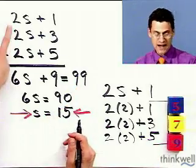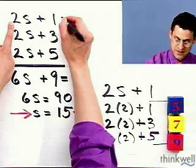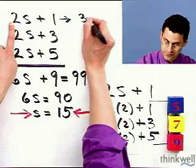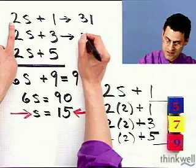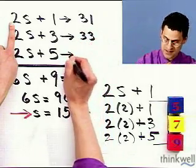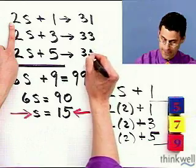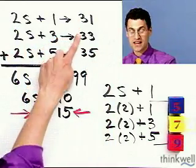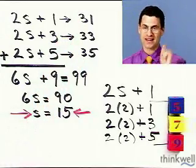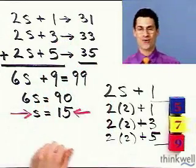But if we go back to this number, this number is now going to be 15 times 2 plus 1, which is 31, which forces this number to be 33, which forces this number to be 35. Notice those are 3 consecutive odd numbers, and voila, if you add them all up, we get 99. I just love these questions!